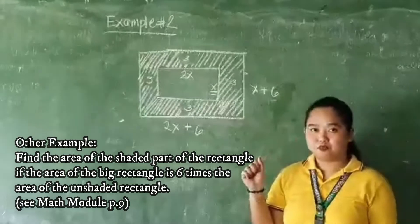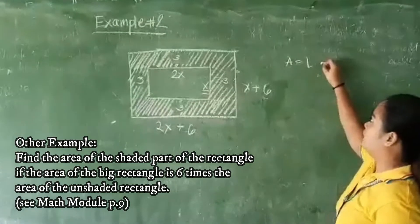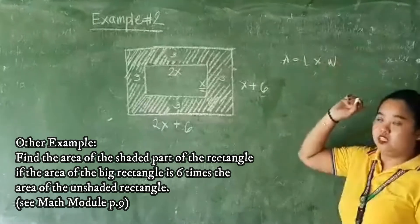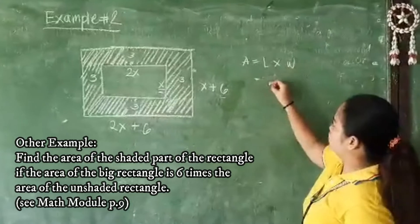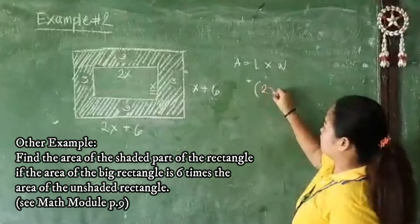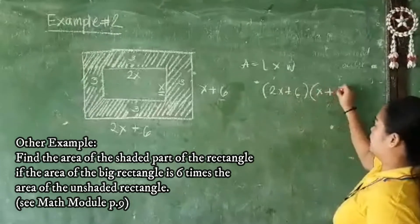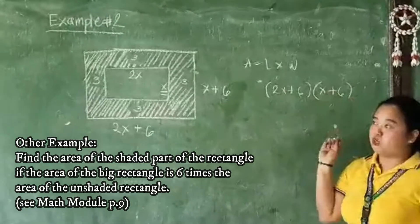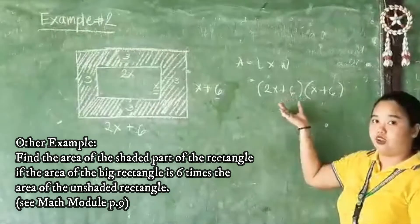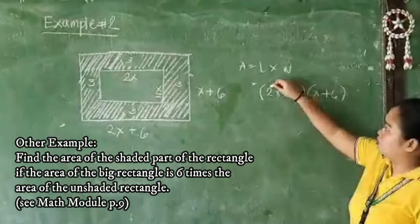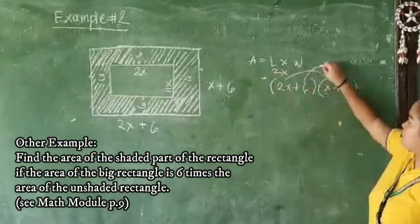So in order to find out the area of our rectangle, we have the formula length multiply by width. This is for the bigger rectangle. So we have the length is 2x plus 6 and x plus 6, the width. So we need to find the quadratic trinomial of this factor. So using the FOIL method, 2x multiplied by x is 2x squared. 6 multiplied by 6 is 36.